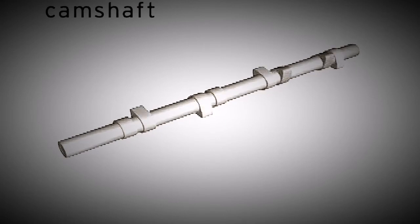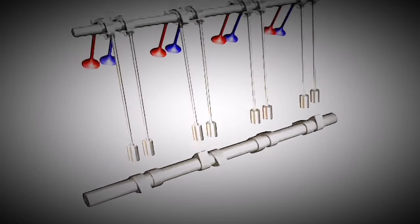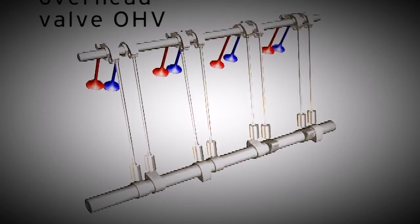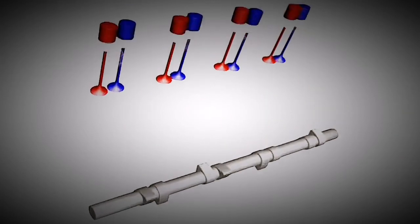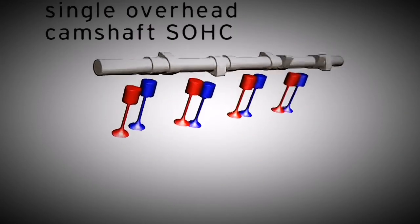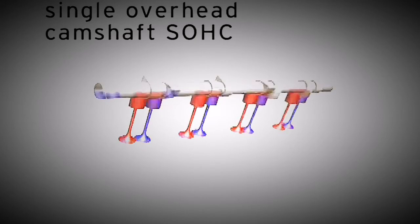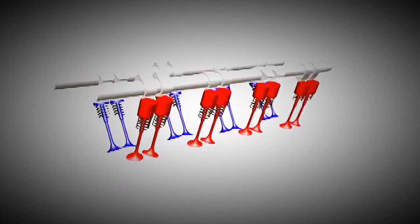Some engines use one camshaft with rocker arms and/or push rods actuating all of the valves. If the camshaft is above the valves, it's called a single overhead camshaft or SOHC engine.